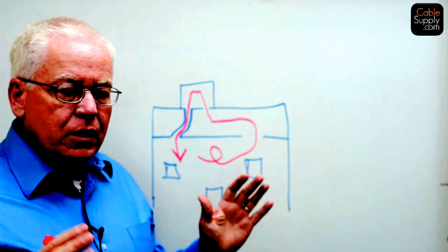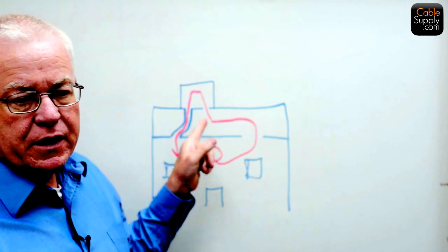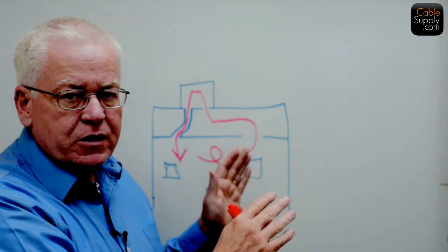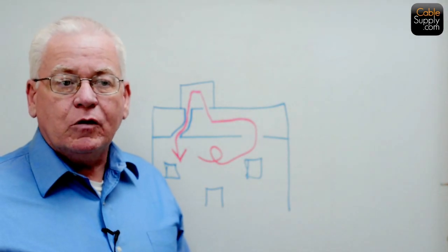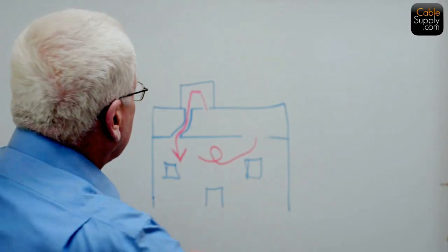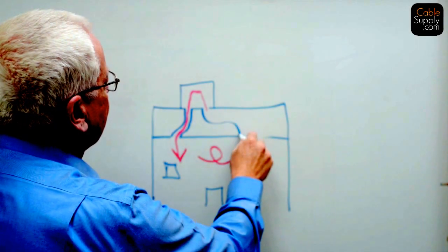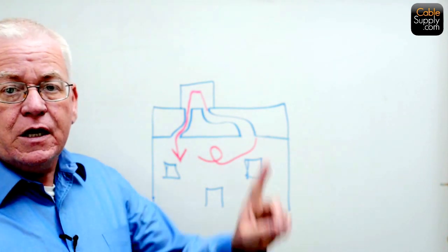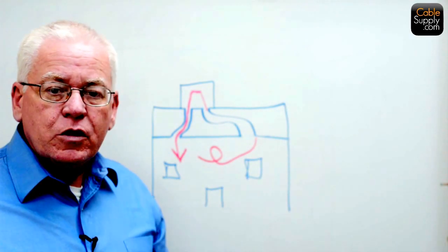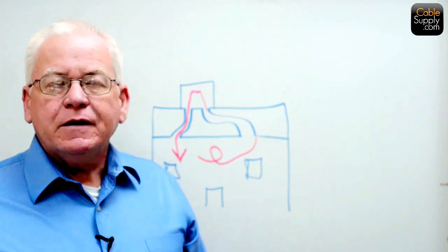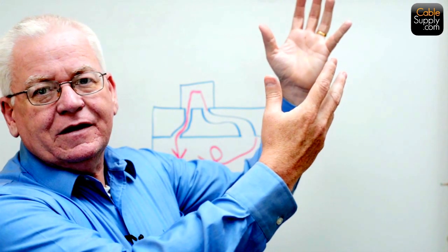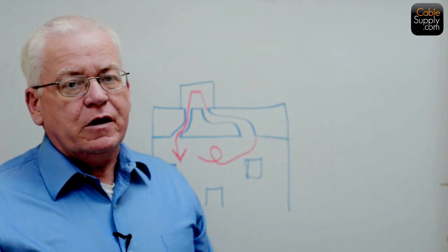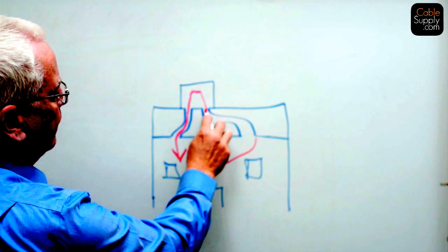In that situation, according to code in most states, that's where you need plenum rated cable. You want to find out: is your ceiling being used as a plenum, as an air duct? If it's not, then you can use PVC cable, also known as CMR cable. Walk through the building and look at the air ducts — see if the return air is completely open up there or ducted to the air conditioner. If it's ducted, you don't need plenum rated because you have that return duct.